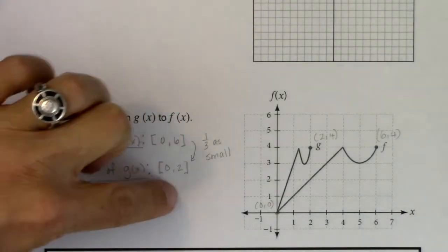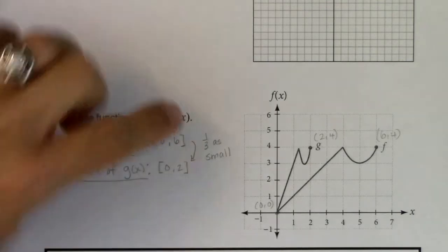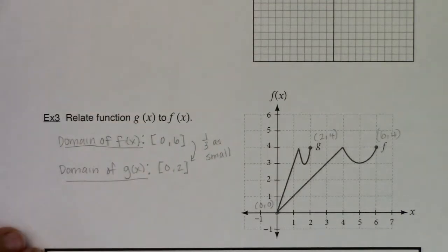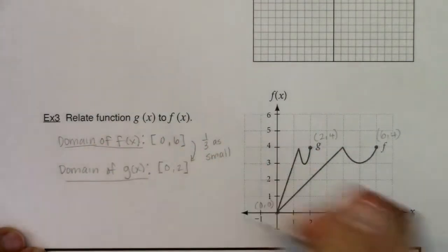I think you'll give me that the domain going from f(x) to g(x) is a third as small. The domain of g is only two units long, where the domain of f was six units long. Or you can think of it as, from here to here, it's a third. Or from here to here, it's three times as much.